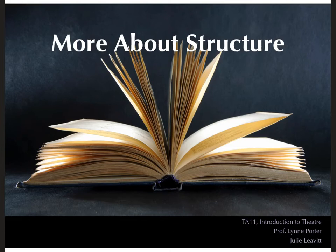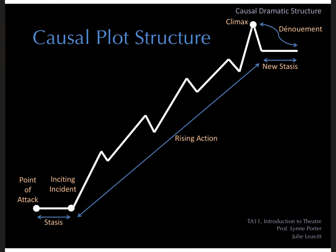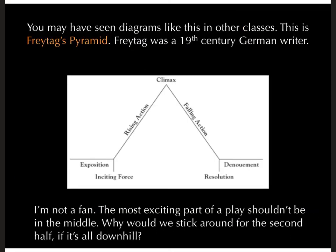Today's lecture is more about structure. Here is our chart of how all those elements of causal plot structure might look if we were to plot it all out on a graph. This is a little bit different looking than what many of you have probably seen in other analysis or literature classes. This is called Freytag's pyramid — Freytag was a 19th century German writer who wrote about dramatic structure, and this tends to get used a lot in literature classes.